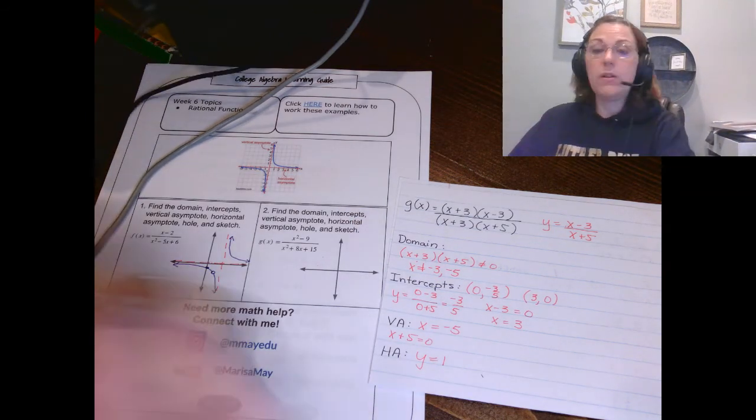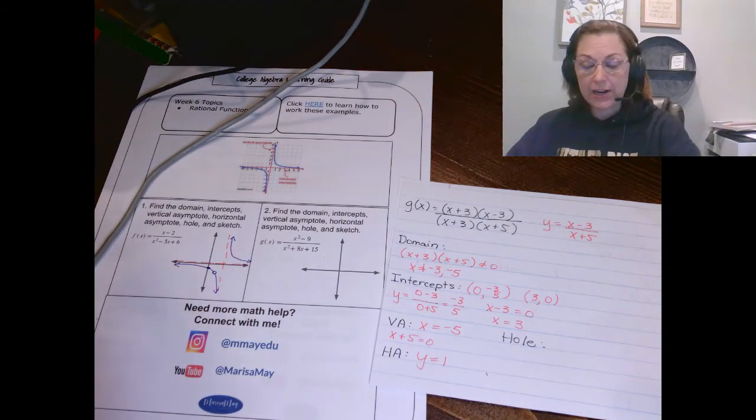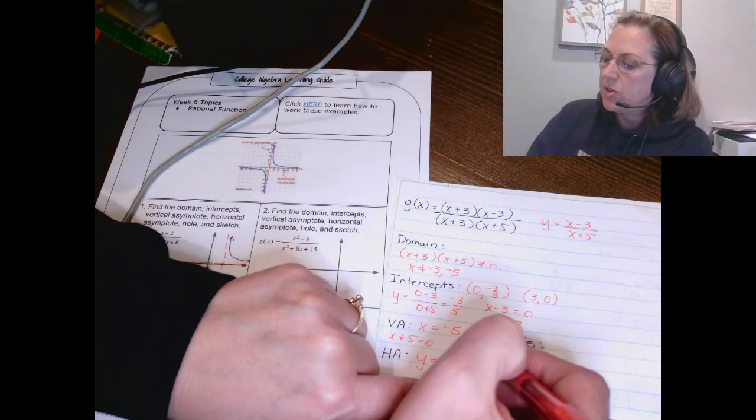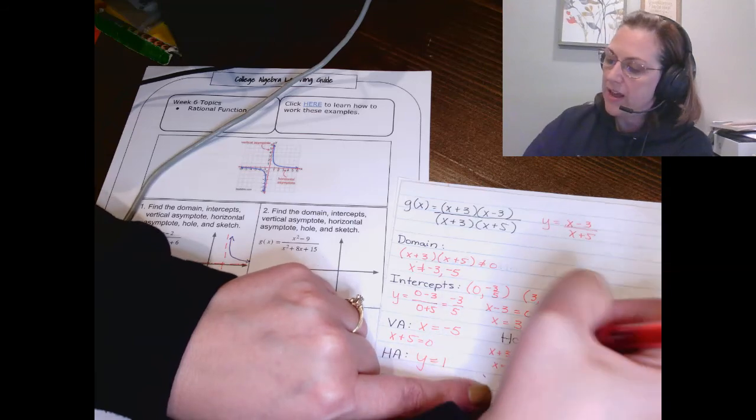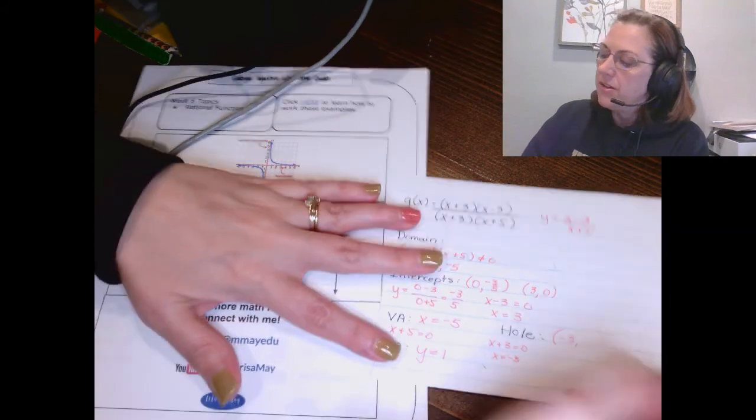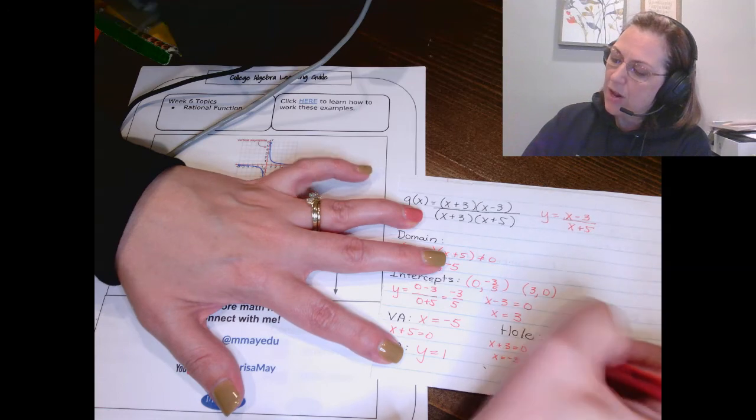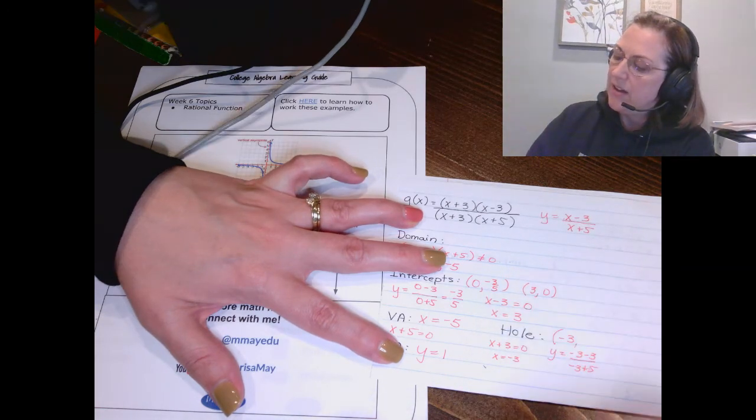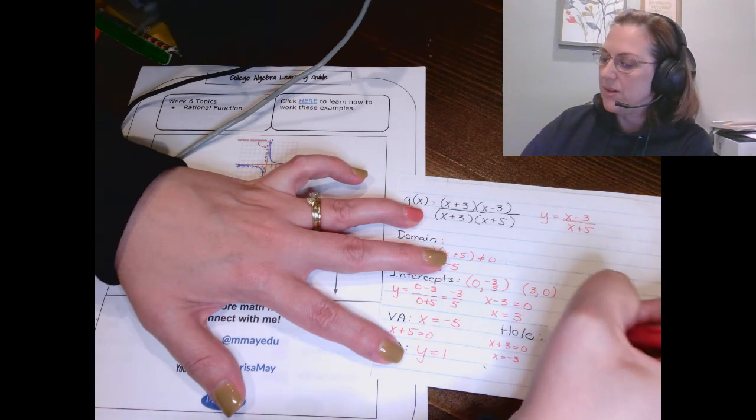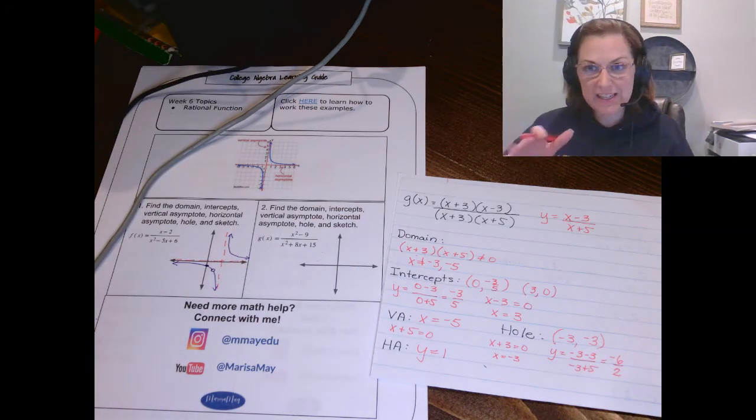Our last detail is our hole. So we take our canceled factor. Remember the x plus 3 canceled? We set that equal to 0. So we know our hole has an x coordinate of negative 3. Now we have to put it into the simplified function to find the y coordinate. So I'm going to put negative 3 minus 3 and on the bottom negative 3 plus 5. Let's see, that gives me negative 6 over 2. So my y value is negative 3. So my hole is at negative 3 negative 3. Let's put all of this together for a sketch.